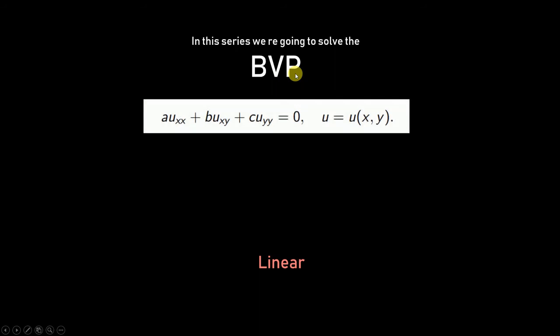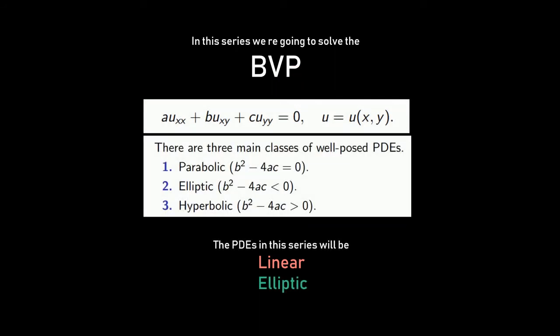In conclusion, in this series we are going to solve boundary value problems. The generic form of the PDE has independent variables x and y, and we can classify PDEs into different kinds depending on coefficients a, b, and c. We will mostly be dealing with linear elliptic PDEs — second-order linear elliptic PDEs. Coupled with boundary conditions, this is called a boundary value problem, and there are two types of boundary conditions: the essential or Dirichlet boundary condition, and the natural or Neumann boundary condition.